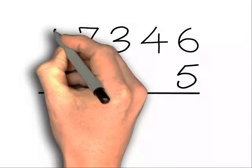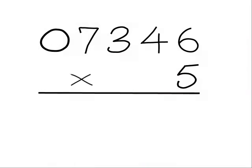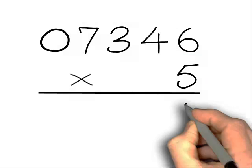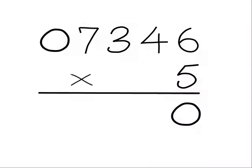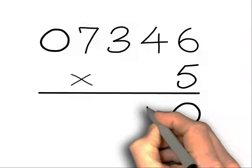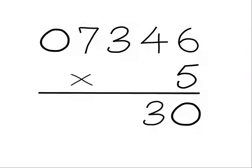First thing we'll do is put a 0 in front of the number. Starting at the right, we have 6. There's no neighbour, so we put down 0 as the answer. Moving left, we're at the 4. The neighbour is 6, so we use 3. We write down the 3.